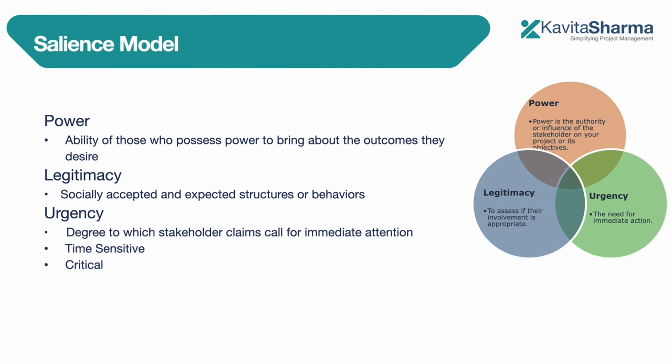From the model itself: power is the ability of those who possess it to bring about the outcomes they desire. Legitimacy is socially accepted and expected structures of behavior by people, organizations, and governments. Urgency is the degree to which stakeholder claims call for immediate action. Urgency can be time-sensitive — needing something now — or information-sensitive, meaning whether the information being sought is critical or non-critical.